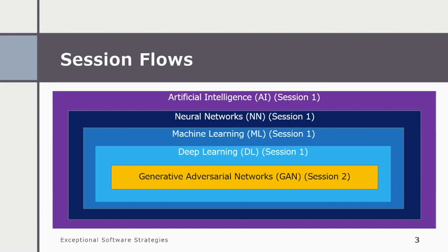I wanted to bring that out, help provide an understanding, and also show what else deep fakes can do, because it truly is a phenomenal technology. Session one was a satellite view of the history leading up to deep learning — we went through artificial intelligence, neural networks, machine learning, and deep learning. Today we're going to go over generative adversarial networks, or GANs, which is really the heart of what we call deep fakes, covering a very broad topic with many capabilities.